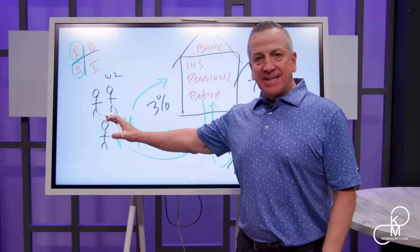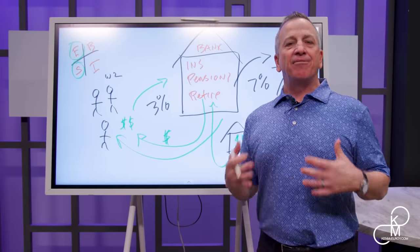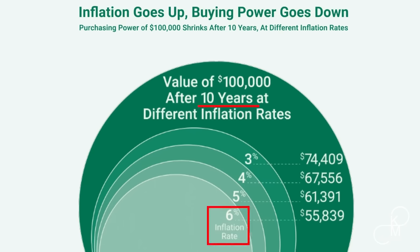So as an example, let's say you're on Main Street and you have $100,000 sitting in the bank and inflation rate has been 6% over 10 years. So your money's still in the bank. It's still $100,000 on your bank statement. It says $100,000. But what does it buy?